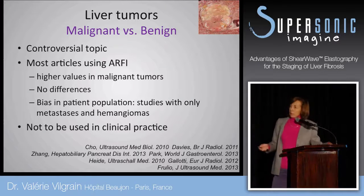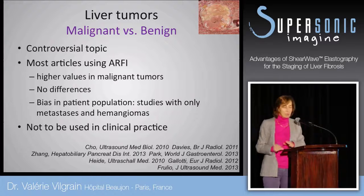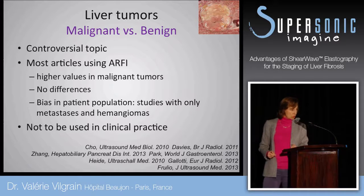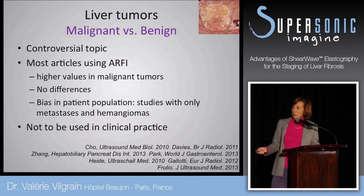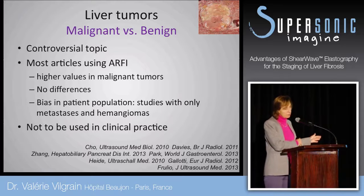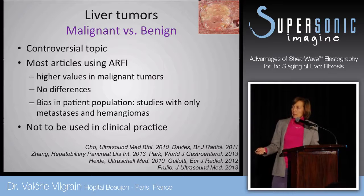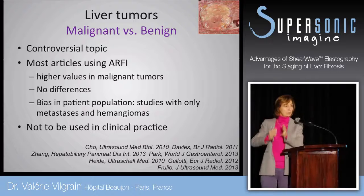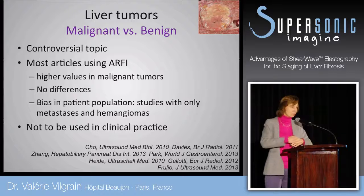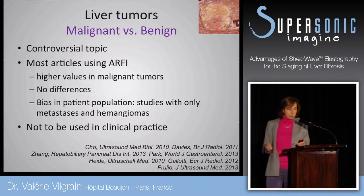Distinguishing malignant from benign lesions by tissue elasticity is a very controversial topic. Most articles have used strain elastography. Some found higher values in malignant lesions; others found no difference. The discrepancy can be explained by bias in patient populations — for example, one paper only compared liver metastases, known to be very hard, with liver hemangiomas, which are very soft. That is not fair; you need the whole spectrum of liver tumors. For this reason, this approach should not yet be used in clinical practice.